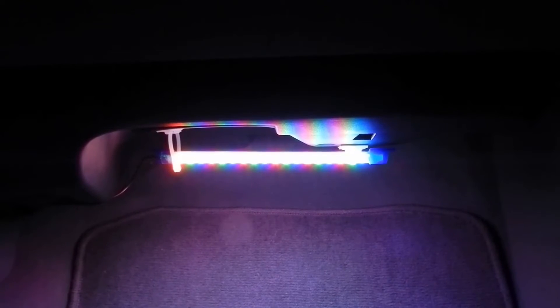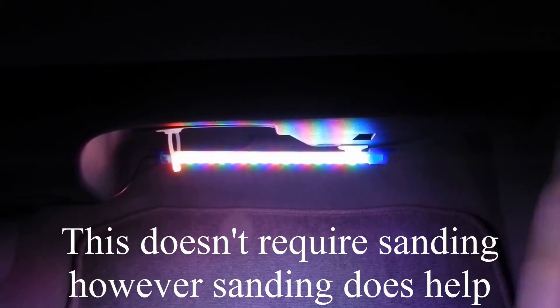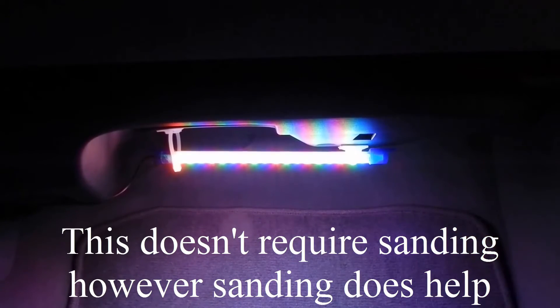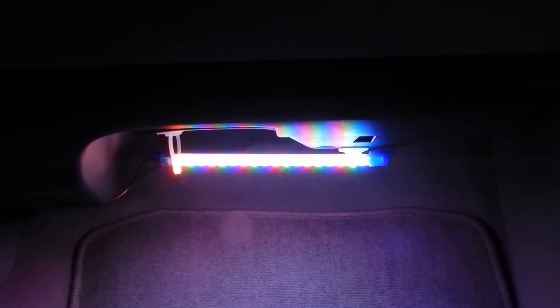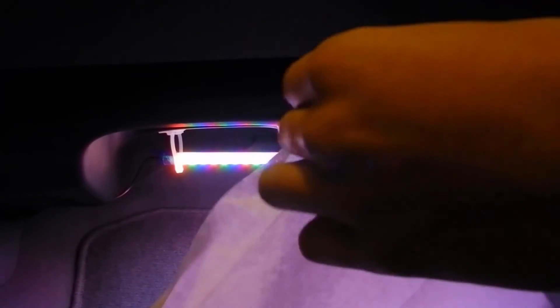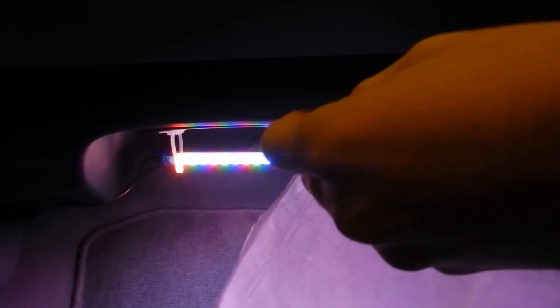Now, of course, if you want to make the light more diffused, you can actually take a simple tissue, some tape, and again, your scissors. All you really do is just take the tissue and split it down the middle.